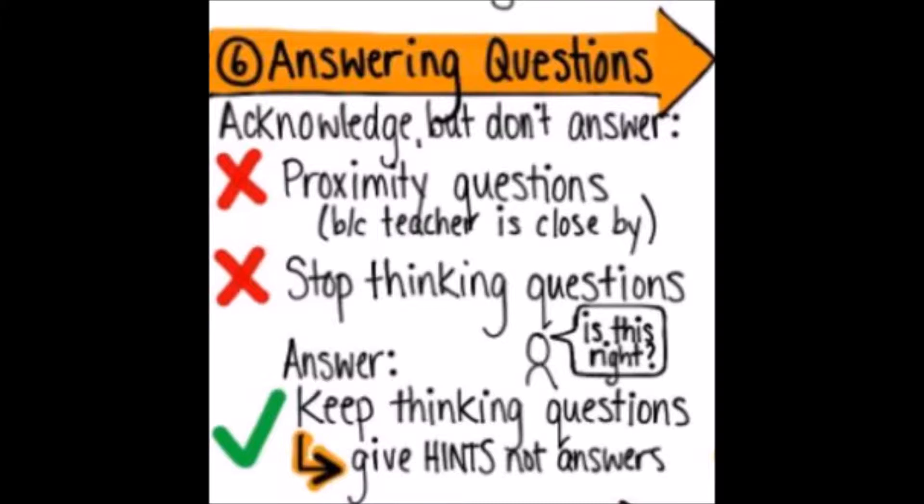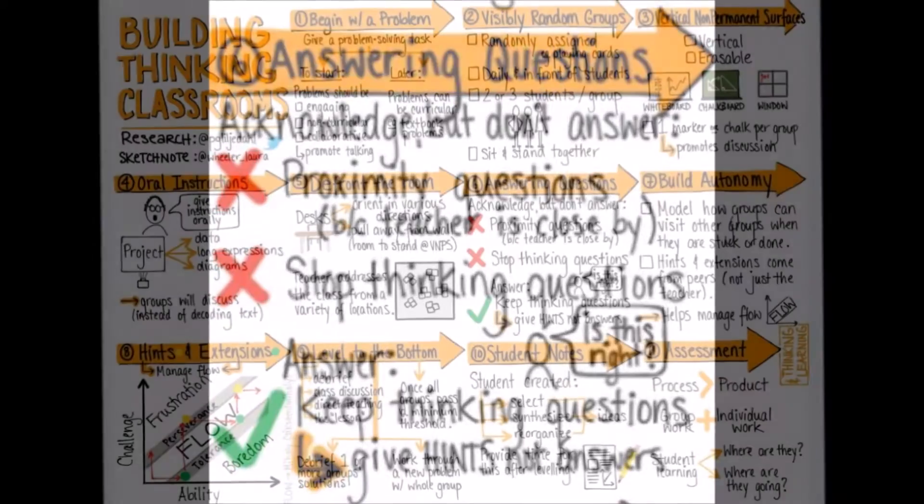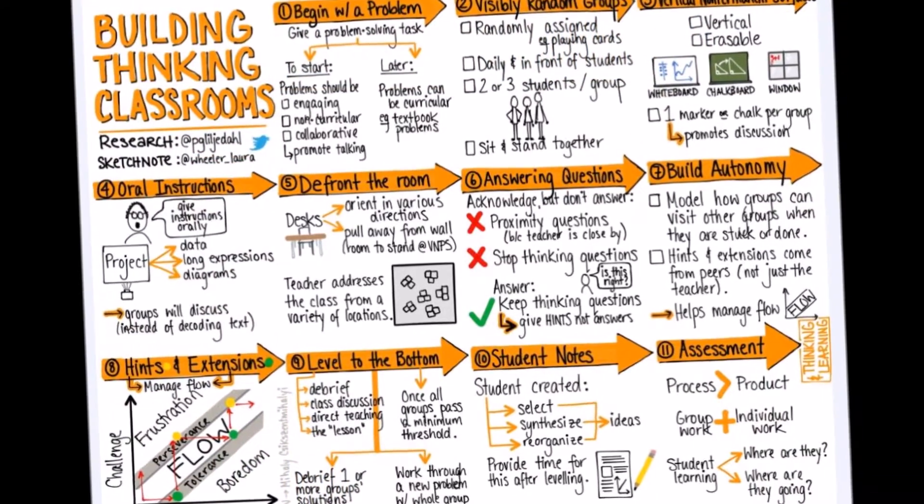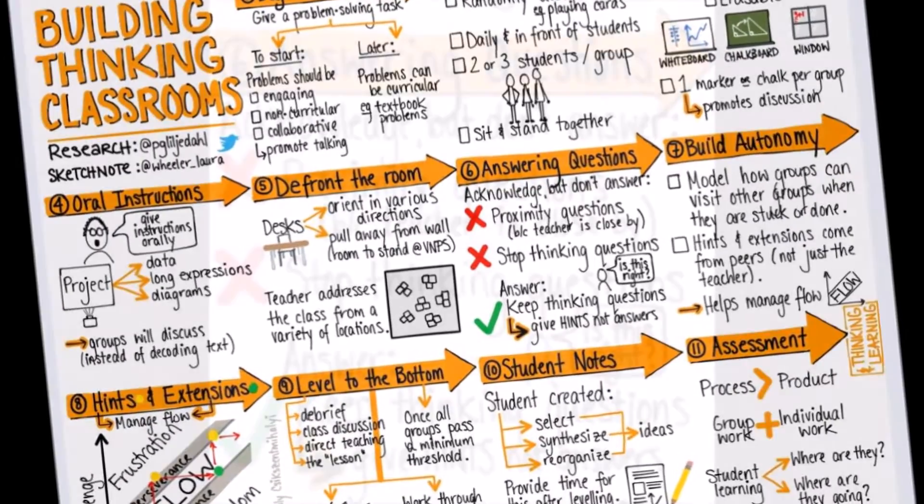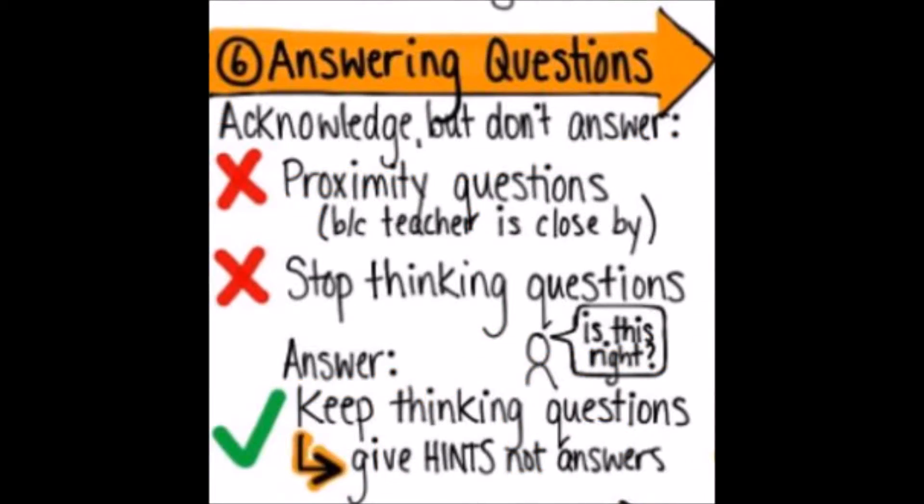The second type of question students ask is called a stop thinking question. Stop thinking questions are usually of the form, is this right? Or is this going to be on the test? These are the questions students ask to allow them to drop into a lower energy level. The third type of question students ask are called keep thinking questions. These are usually clarifying questions.